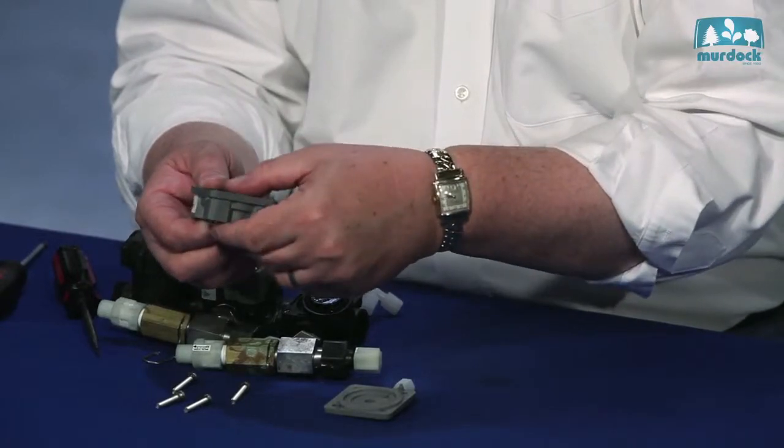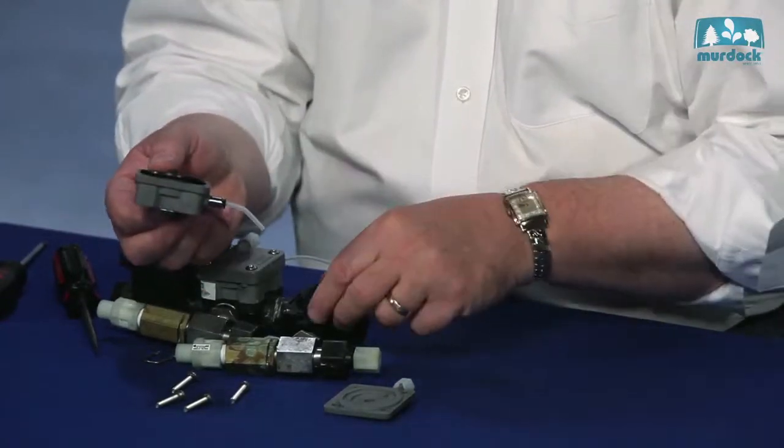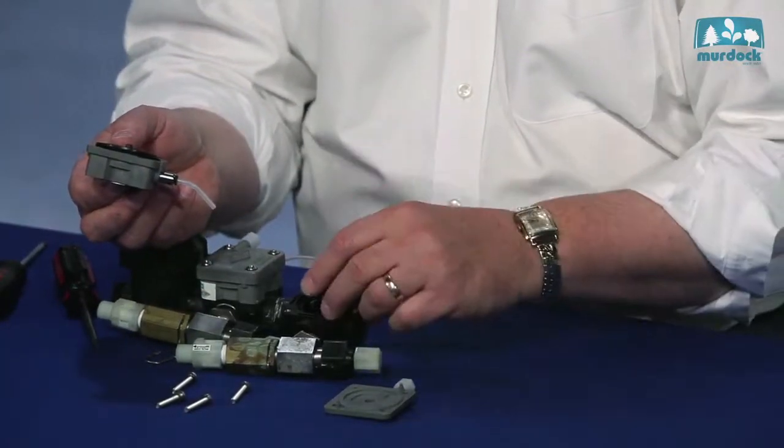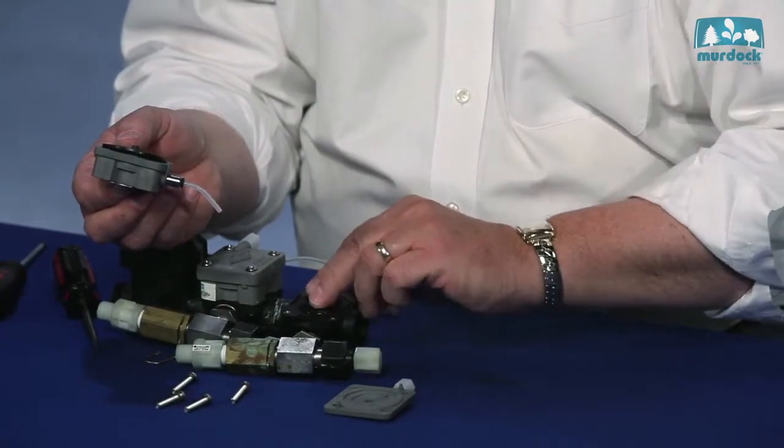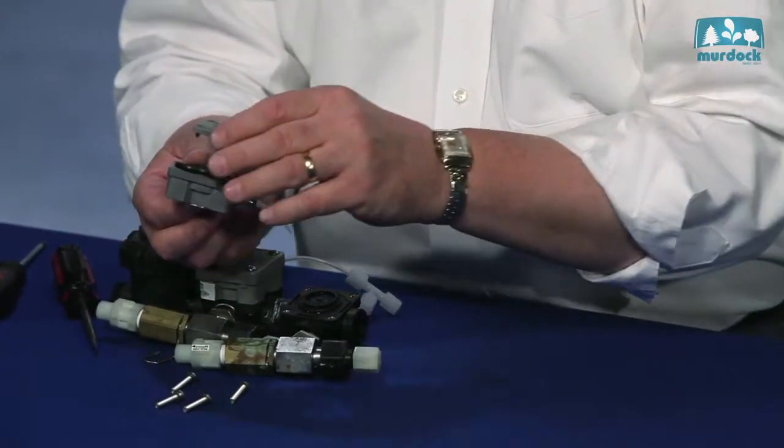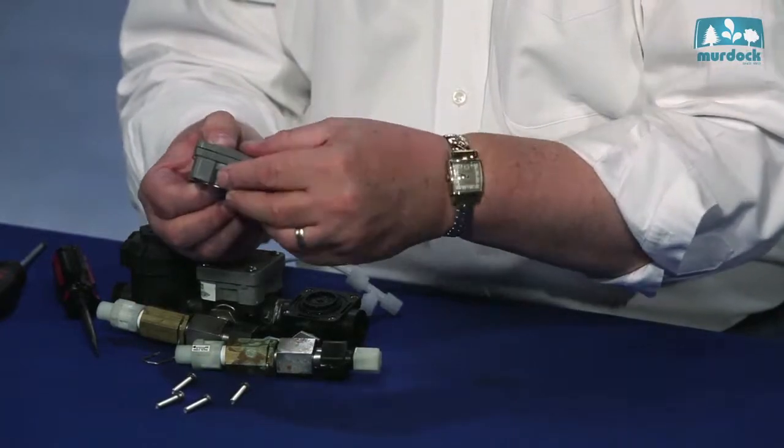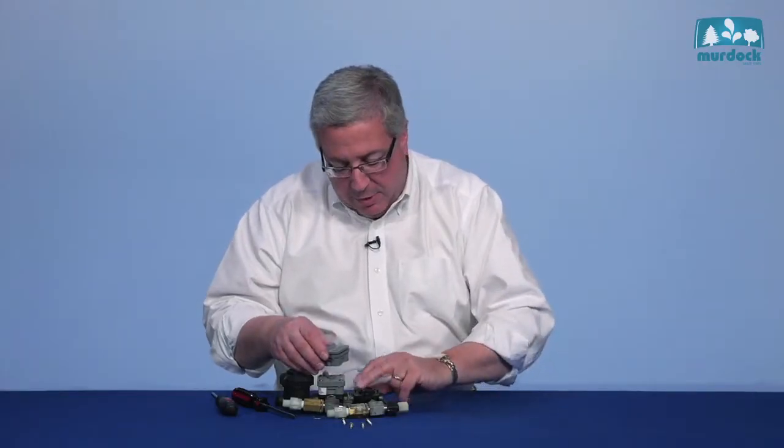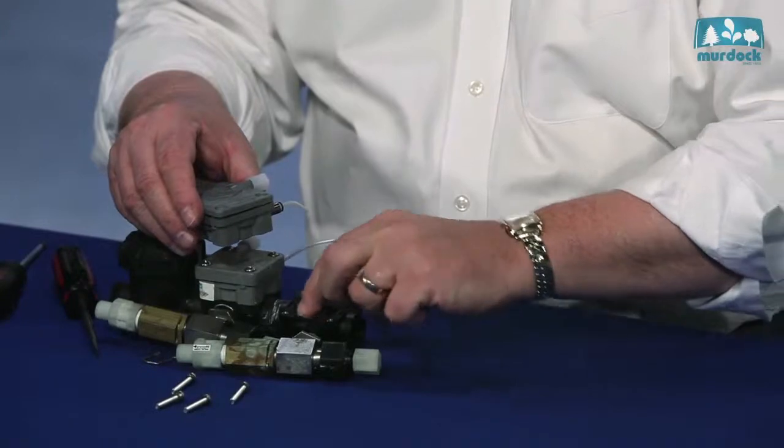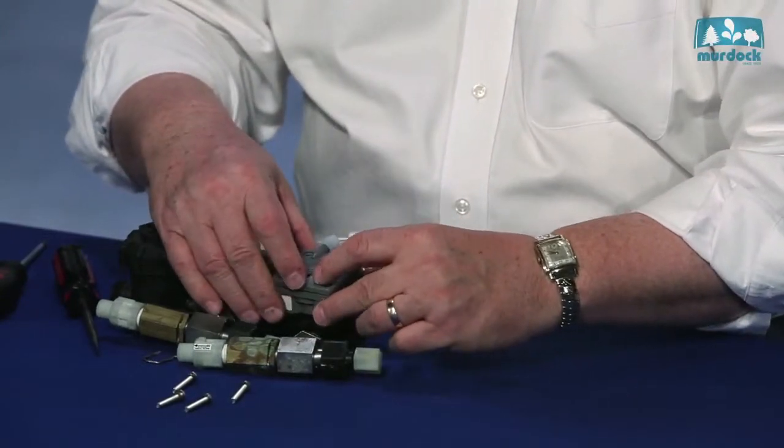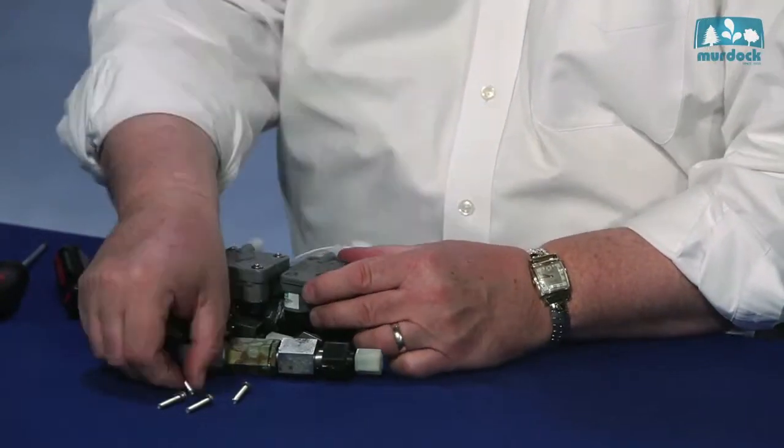So what you've done is replace the operating diaphragm here, the diaphragm here, put your new diaphragm in place, make sure it's seated properly. Put your cap back on. Make sure this is all still flush so there's not any sharp edges anywhere. Drop it back down in place and take your screws and reassemble.